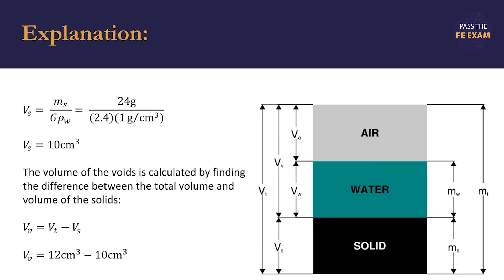We substitute in our known values, 12 cubic centimeters for the volume of the sample, and 10 cubic centimeters for the volume of just the solids. This leaves us with 2 cubic centimeters for the volume of the voids.